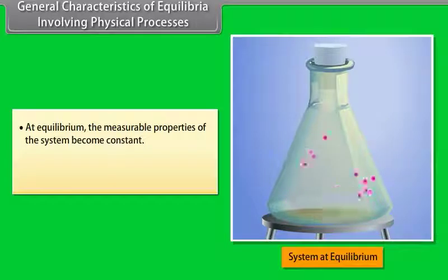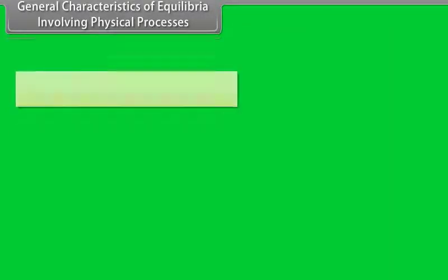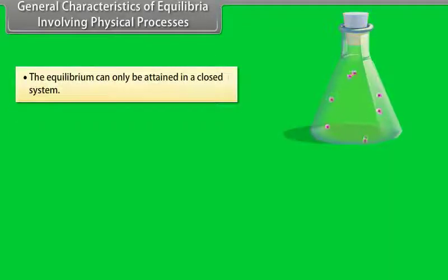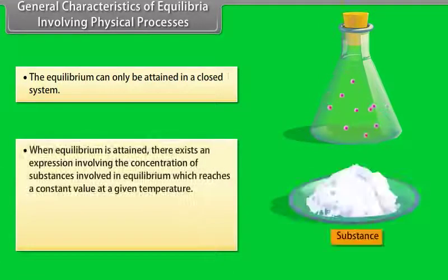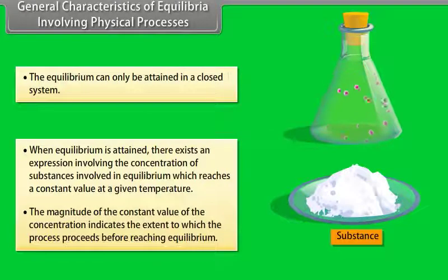General characteristics of equilibria involving physical processes: At equilibrium, the measurable properties of the system become constant. At equilibrium, there is a dynamic balance between the two opposite processes. The equilibrium can only be attained in a closed system. When equilibrium is attained, there exists an expression involving the concentration of substances which reaches a constant value at a given temperature. The magnitude of this constant value indicates the extent to which the process proceeds before reaching equilibrium.